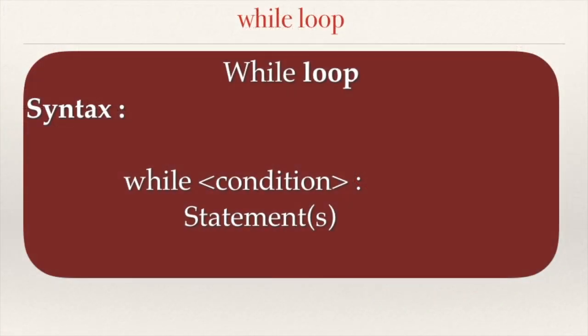Now let us come to the while statement. The while statement is another iterative or looping statement in Python, used to repeat a set of statements several times — or rather a number of times which is not known in advance. The while loop has a condition associated with it. As long as the condition is true, the body of the while loop keeps executing. As soon as the condition becomes false, the loop stops and control exits.